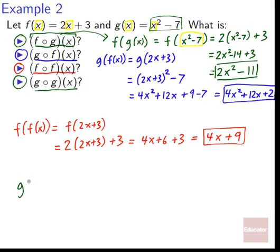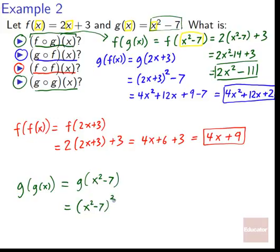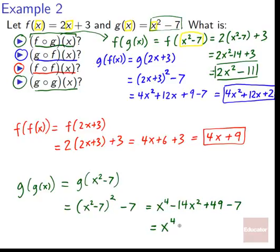And finally, g composed with g of x, written as g of g of x. g of x is x squared minus seven, so now it's g acting on x squared minus seven. g of box equals box squared minus seven. So plugging in x squared minus seven: quantity x squared minus seven, squared, minus seven. Squaring that: x to the fourth minus seven x squared minus seven x squared plus 49, minus seven. That's x to the fourth minus 14 x squared plus 42.